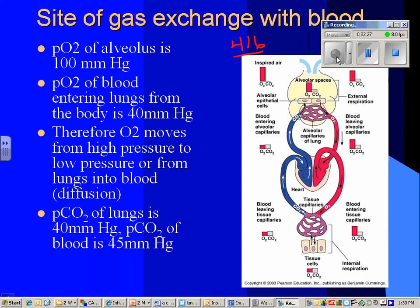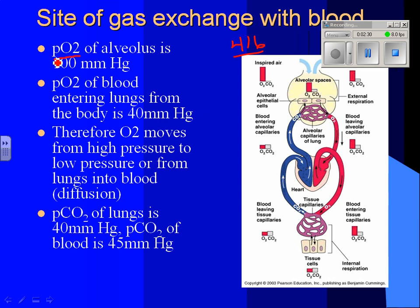The pressure of oxygen in your alveolus is 100 millimeters of mercury — that's the unit of measurement, barometric pressure. When you breathe air in, the pressure of oxygen in regular air is about 160. By the time it gets into your alveolus and your lung, it's down to 100. Does anyone have an idea why that might be — how you can have less oxygen in your lungs than in the air?